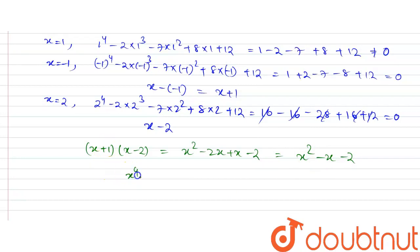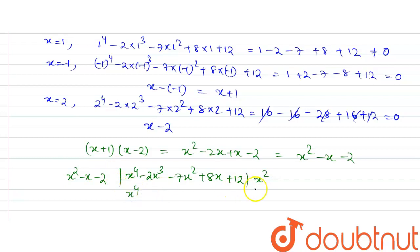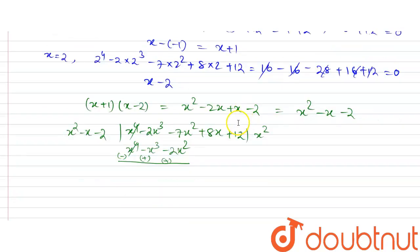Now dividing x⁴ minus 2x³ minus 7x² plus 8x plus 12 by x² minus x minus 2. The first term is x², since x² times x² equals x⁴. Then x² times (minus x) is minus x³, and x² times (minus 2) is minus 2x². After subtracting: x⁴ cancels, minus 2x³ plus x³ gives minus x³, and minus 7x² plus 2x² gives minus 5x².